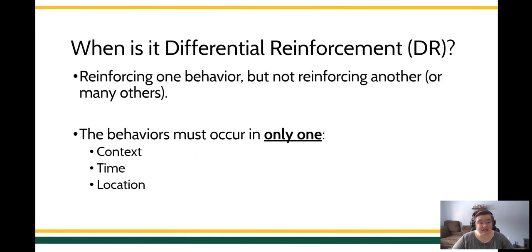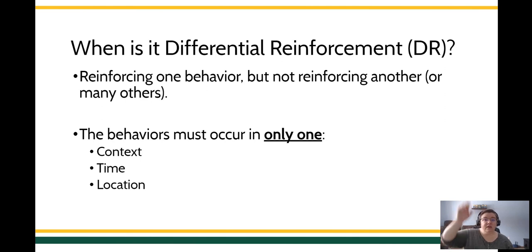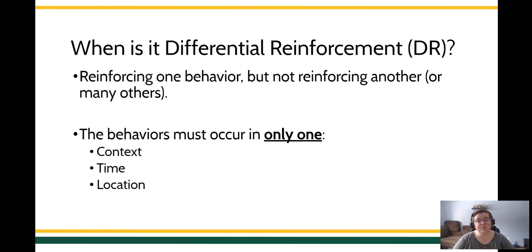Things you want to look for: are you reinforcing one behavior and not reinforcing other physically different behaviors? This can be extinction or a punishment schedule — are you decreasing another response? But always look carefully. Make sure you don't have a situation where you're talking about behavior in different places, different contexts, or different times with different people. Teaching someone to raise their hand in one class but not in another class — that's a different procedure. Teaching people to do something in the presence of one person and not another is the same behavior in different contexts, and that's a different procedure we'll learn later.